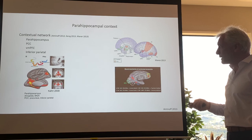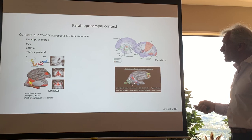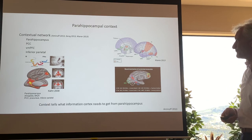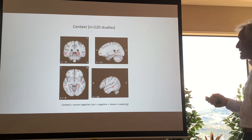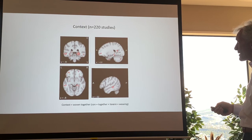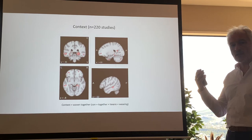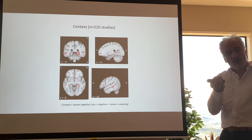The contextual network — because parahippocampal is just an area and we don't want to limit ourselves to a phrenological approach — involves the parahippocampus, the posterior cingulate cortex, the ventromedial prefrontal cortex, the inferior parietal area, and the anterior temporal pole: basically your default mode network. The word 'context' comes from the Latin 'con' meaning together and 'texere' meaning weaving — so context means woven together. Time, place, and person are woven together with the specific memory item you're pulling from memory.